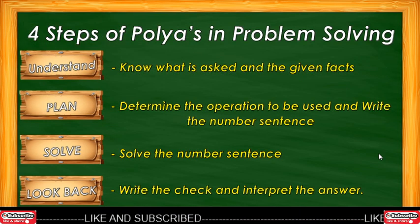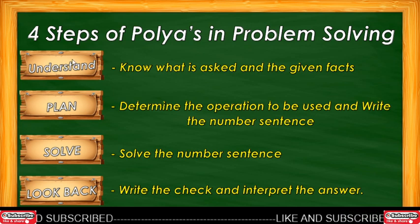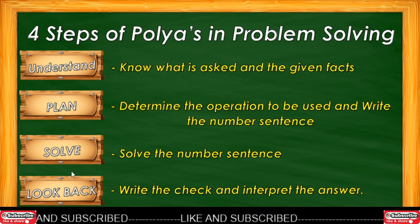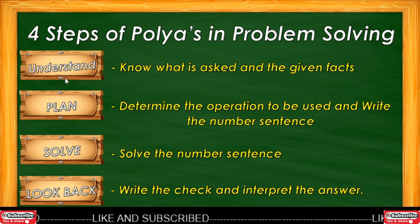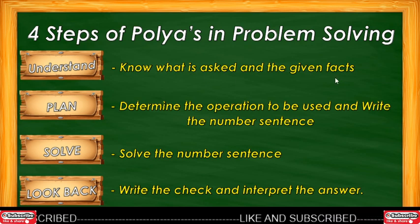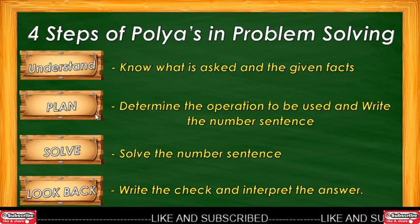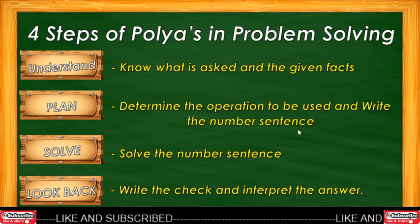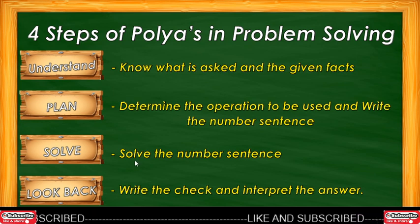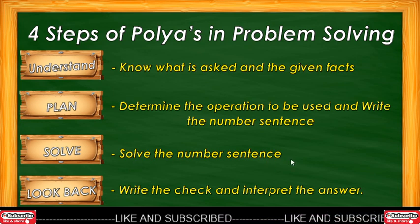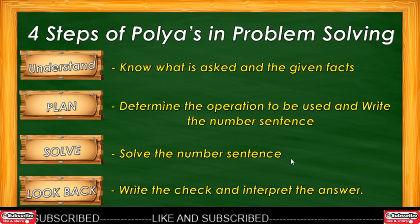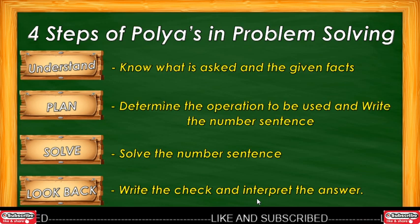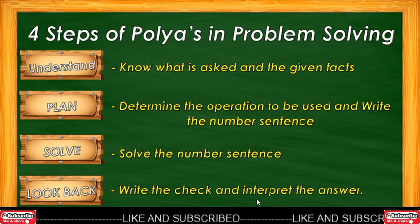Here is an example of a routine word problem using the four steps in problem solving: Understand, Plan, Solve, and Look Back. In Understanding, we identify what is asked and what are the given facts. In Planning, we determine the operation to be used and write the number sentence. In Solving, we solve the number sentence and write our complete solution. In Look Back, we check and interpret our answer and write the label.